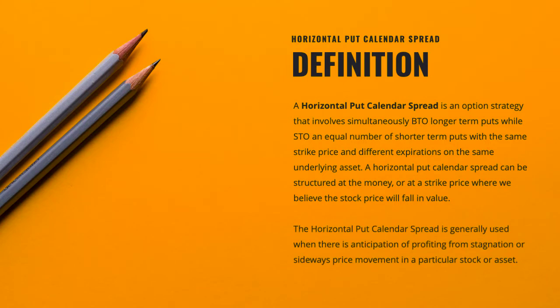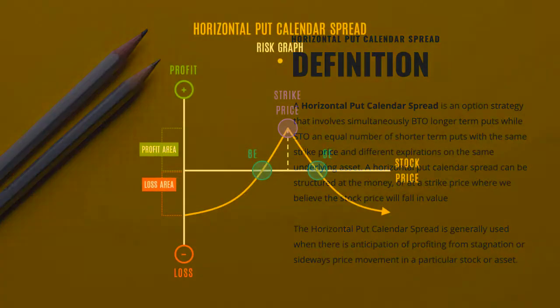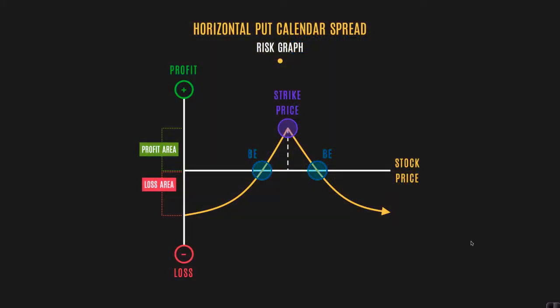The horizontal put calendar spread is generally used when there's anticipation of profiting from stagnation or sideways price movement in a particular stock or underlying asset.